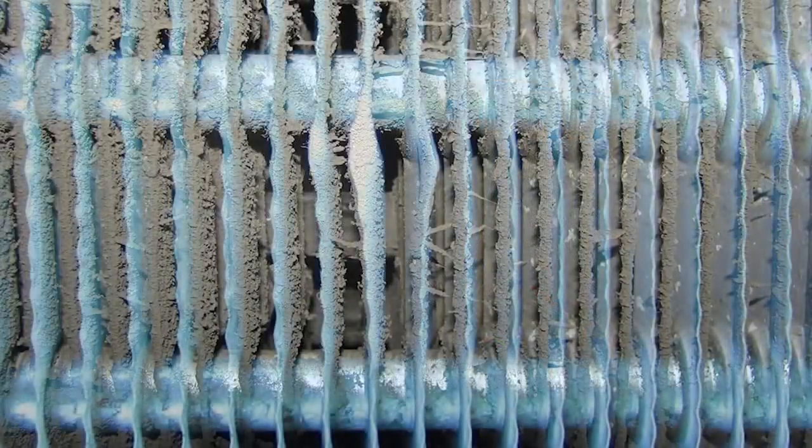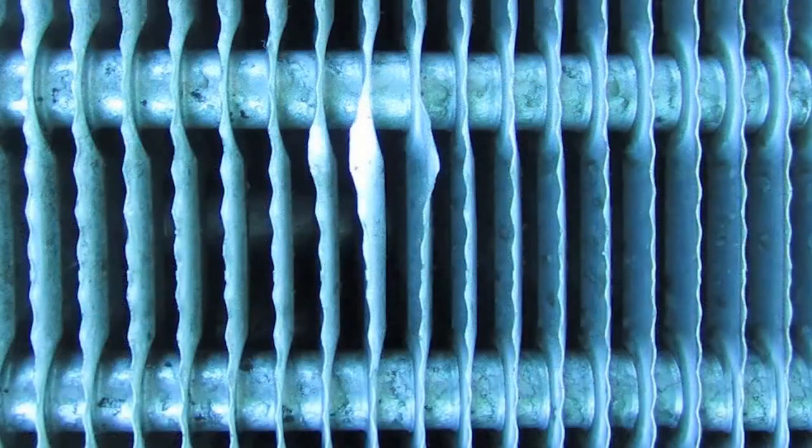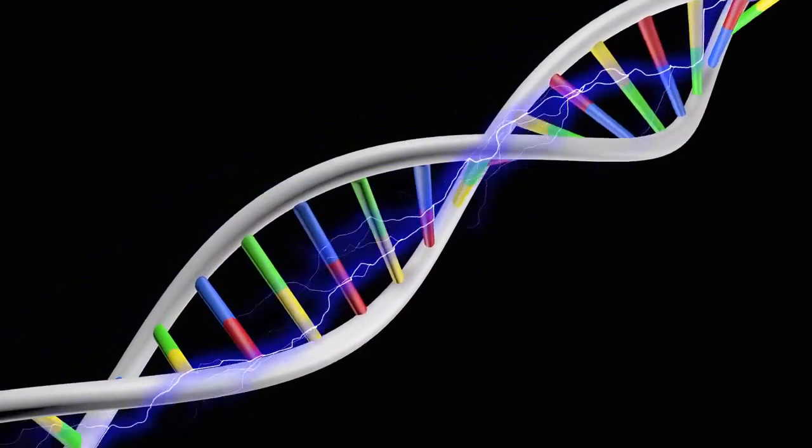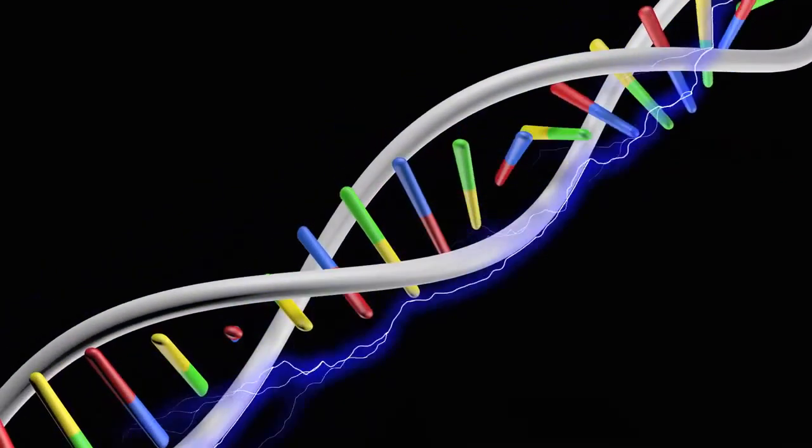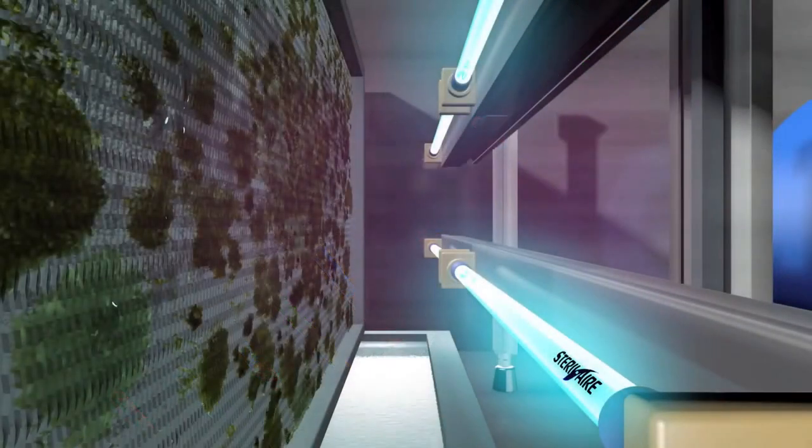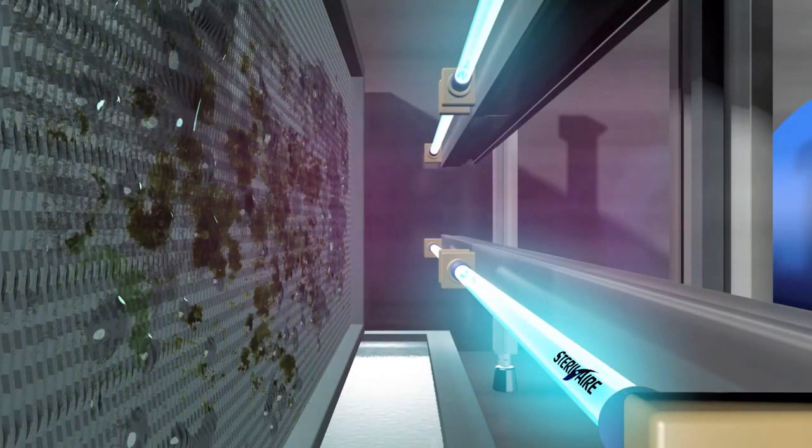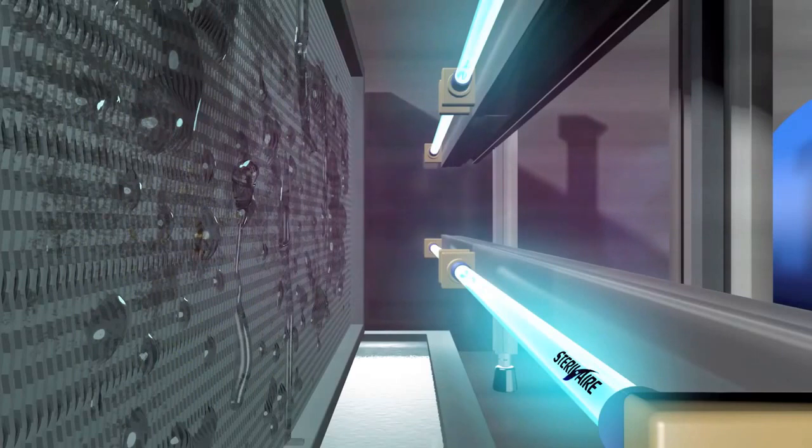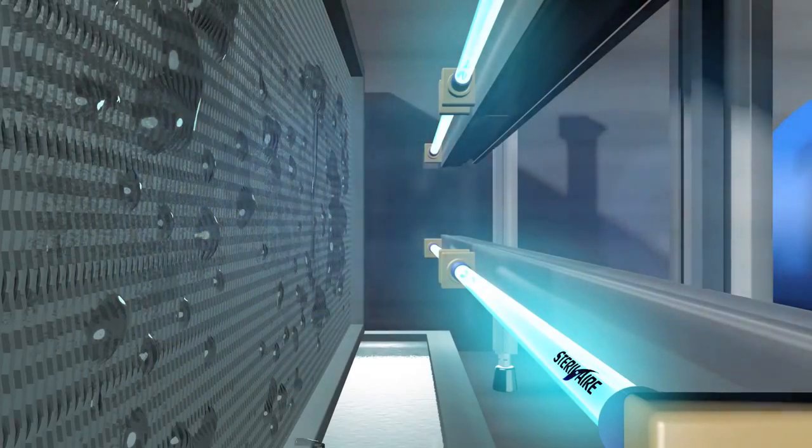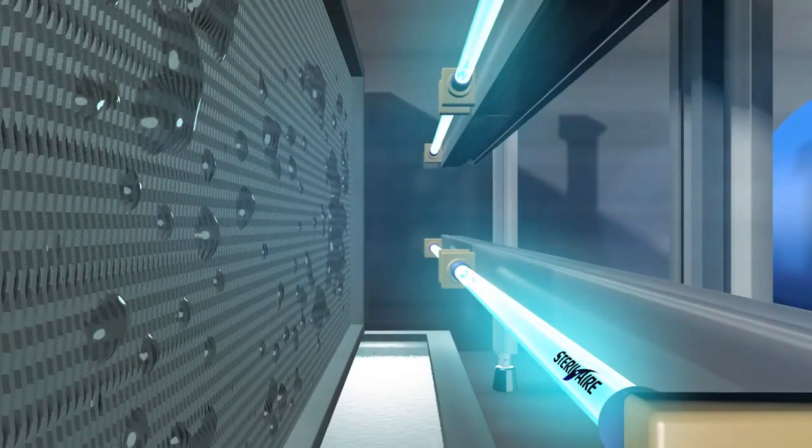Sterile Air's emitters continuously clean the coil fins by destroying the DNA inside the microbes. Once the DNA is destroyed, the microbe can neither grow nor duplicate, so it dies. The dead mold falls away with the dirt, and is washed by the condensate into the drain pan.